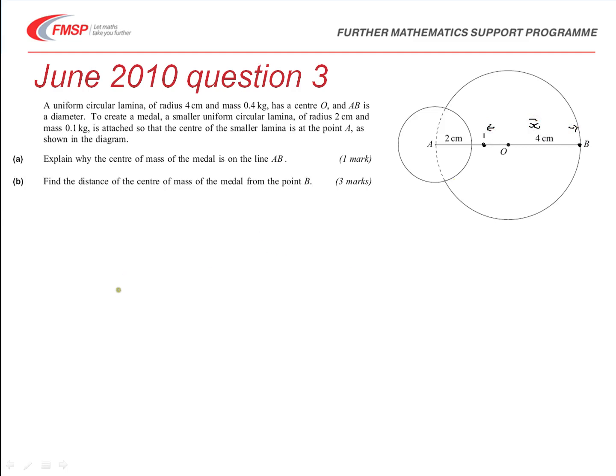Then we can say, well, the total mass of the system is 0.4 plus 0.1, so that's going to give us 0.5 X bar. It must be equal to each separate mass multiplied by its distance from B, so the 0.4 kilograms is 4 centimetres from B, and then the 0.1 kilogram is going to be 8 centimetres from B.